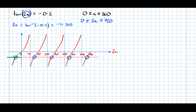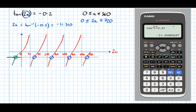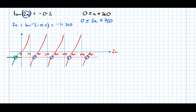The tan graph repeats itself every 180 degrees, so to find the next solution we add 180, then add 180 again, and so on. So we started off with minus 11.310, then add 180 — because we've used the answer button — we get 168.690. These are 2x values, not x values. So 2x equals minus 11.310, but that's outside our limits of 0 to 720, so we know that's not going to be a final answer.